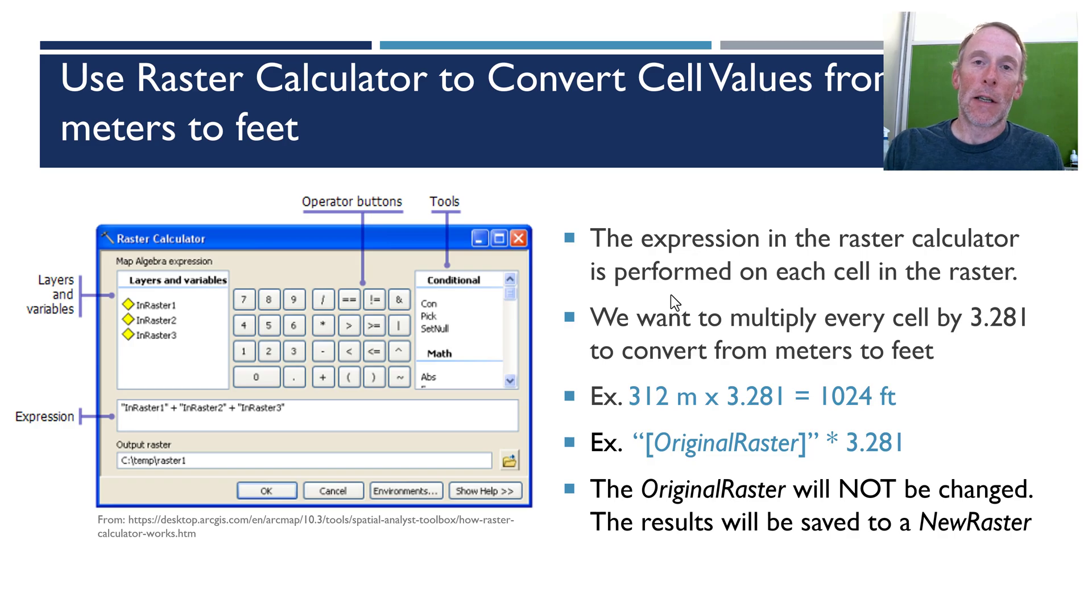Most of the products that we're using in GIS come in a metric form and if we need to get them into those more typical American units we've got to do some conversion. But the same techniques we're going to use to do this are applicable to any sort of mathematical manipulation you want to do across a raster.